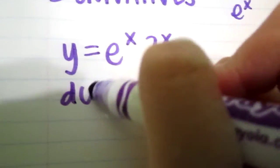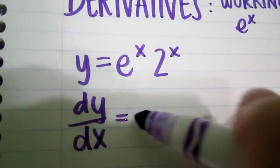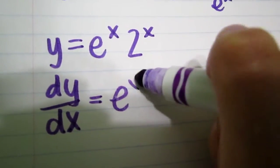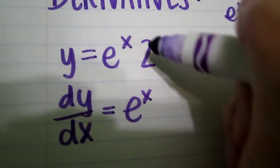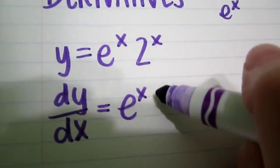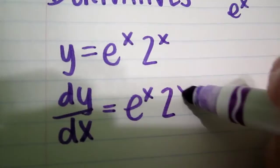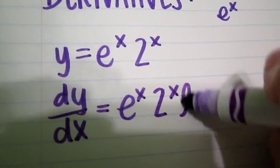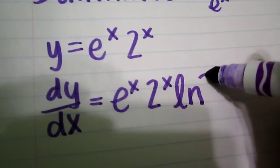So that means dy dx is equal to the first times the derivative of the second, which is simply 2 to the x, whatever it is, natural log of the base, which is 2.